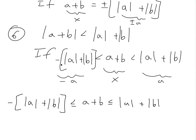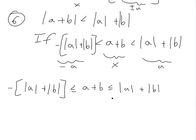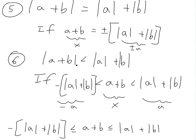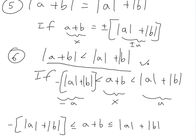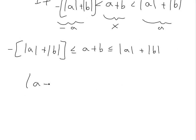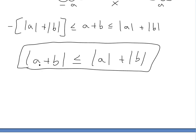As you can see from the inequality we derived, both cases hold: either A plus B equals plus or minus the sum of absolute values (giving equality), or A plus B lies strictly between those bounds (giving strict inequality). Combining both, we conclude the absolute value of A plus B is less than or equal to the absolute value of A plus the absolute value of B. That completes the proof, and you can also see it visually from the triangle picture or by substituting opposite signs for A and B.